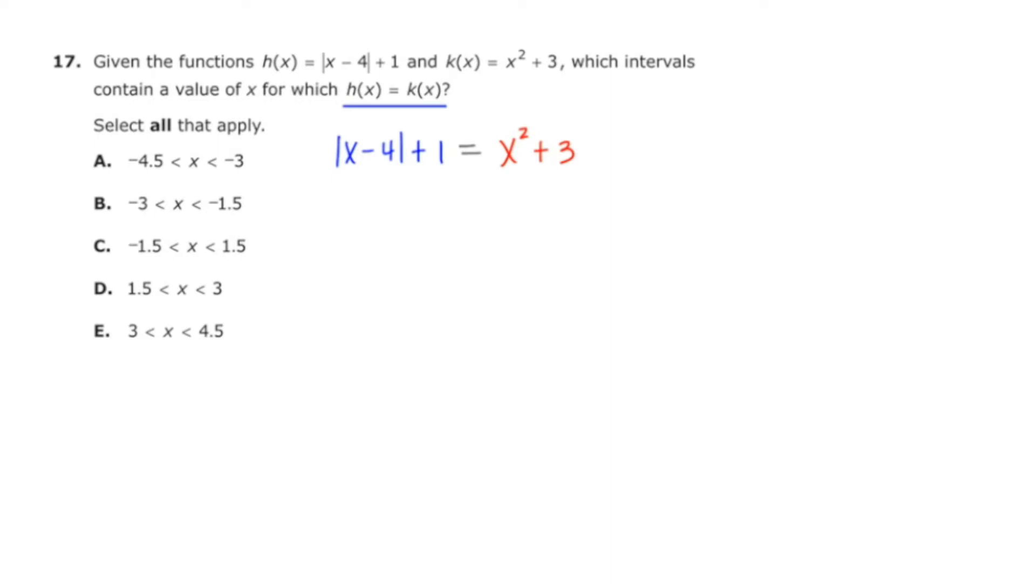Now the left hand side is an absolute value function whose graph looks like the letter V and this particular V is going to be shifted four units to the right and one unit up. So I'm going to set up some axes to show you that. I'm going to go four units to the right and one unit up and I also can very quickly assess what the y-intercept would be of this V. If I let x equal 0, I get 4 plus 1 is 5. So 1, 2, 3, 4, 5. Knowing that this V is symmetric, I can go four more units to the right. 1, 2, 3, 4 and up to 5. And now I can draw this V.